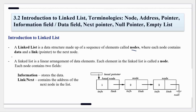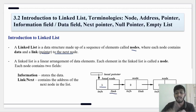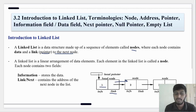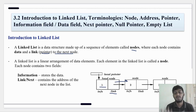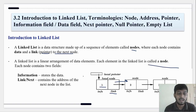Each node contains data and a link, and this link we call a pointer to the next node. Every node has two things: first is info, meaning actual data which we have to store, and the second is a link, and this link we call a pointer — this pointer points to the next node.